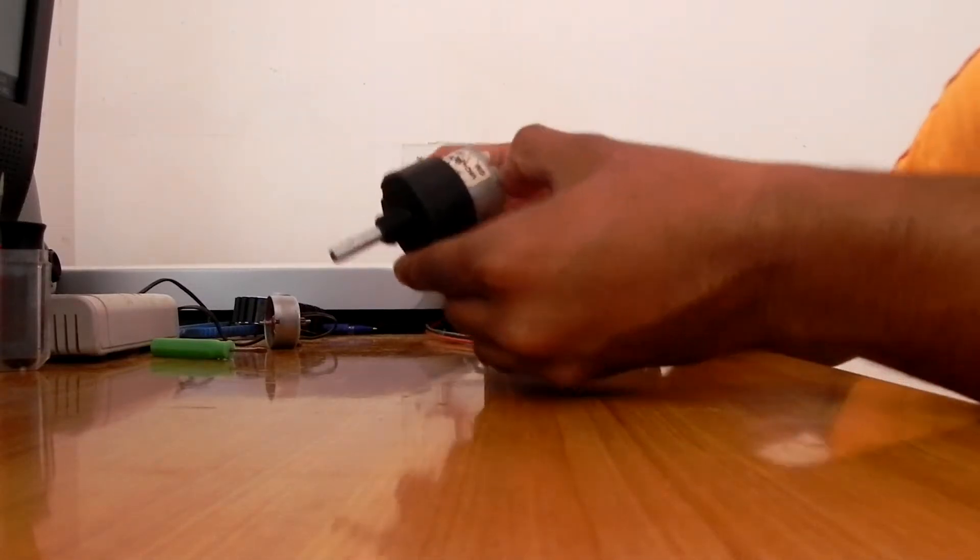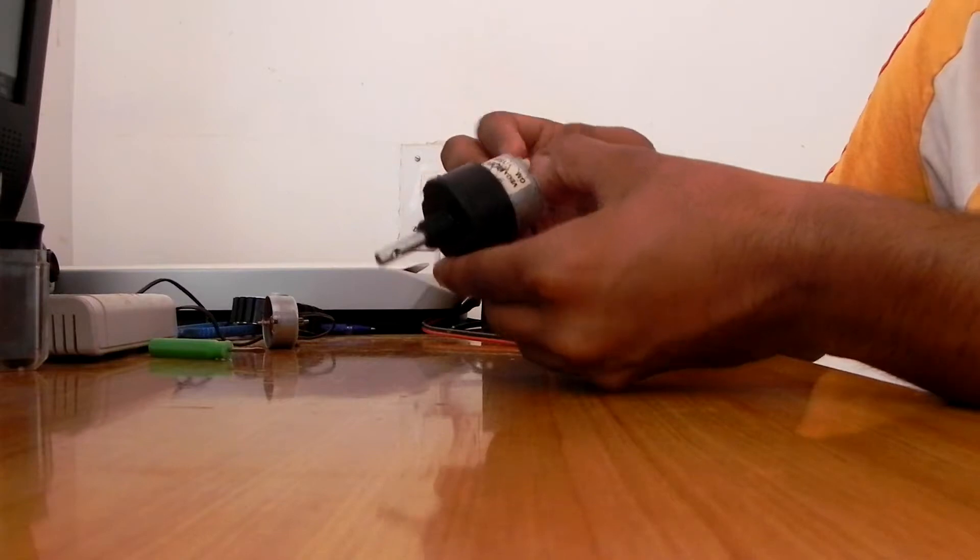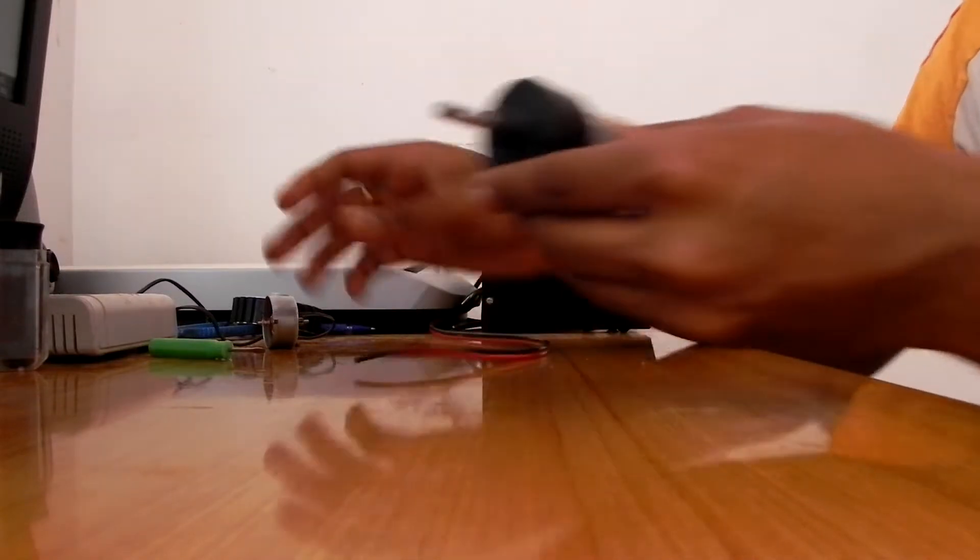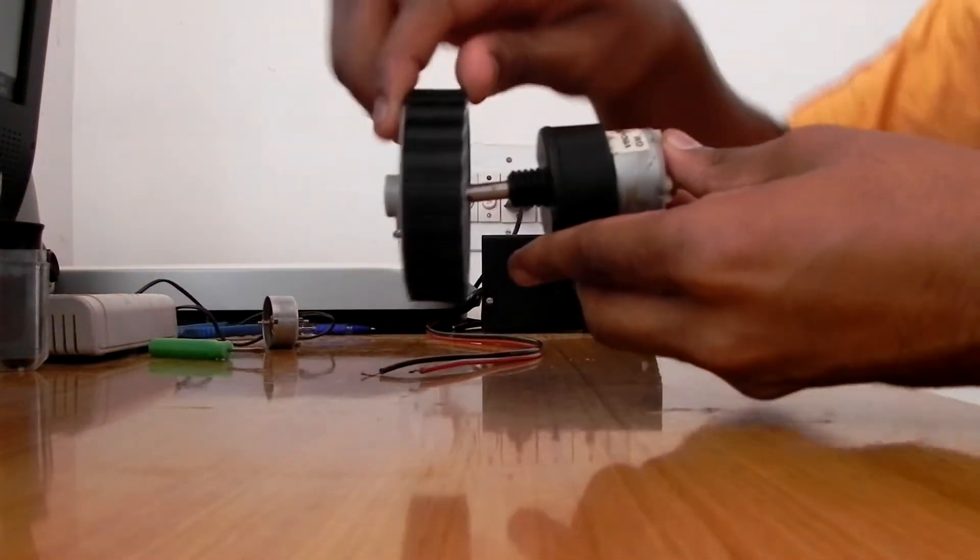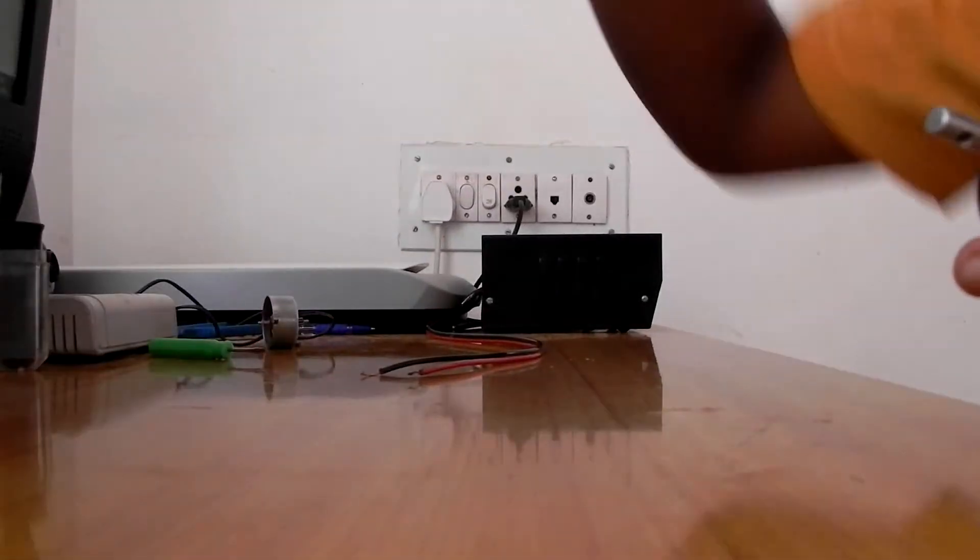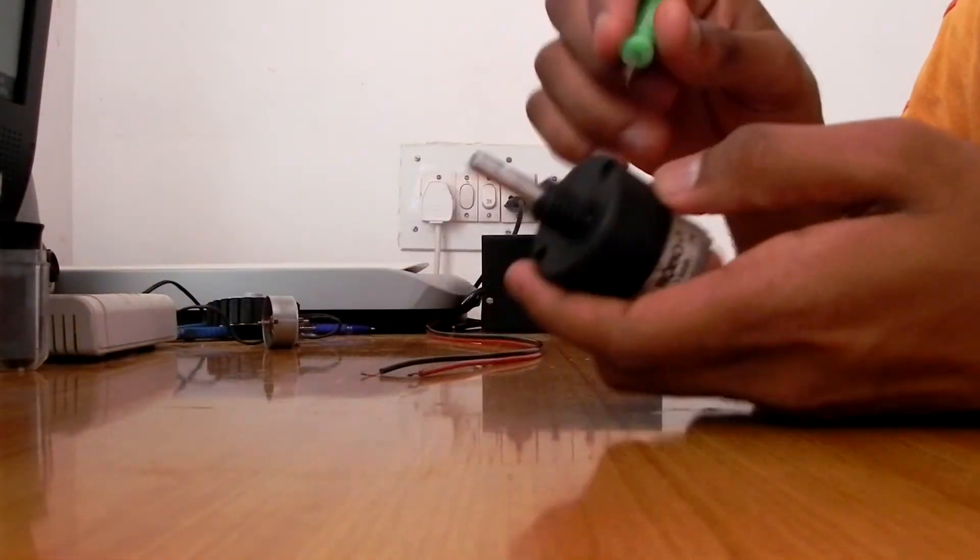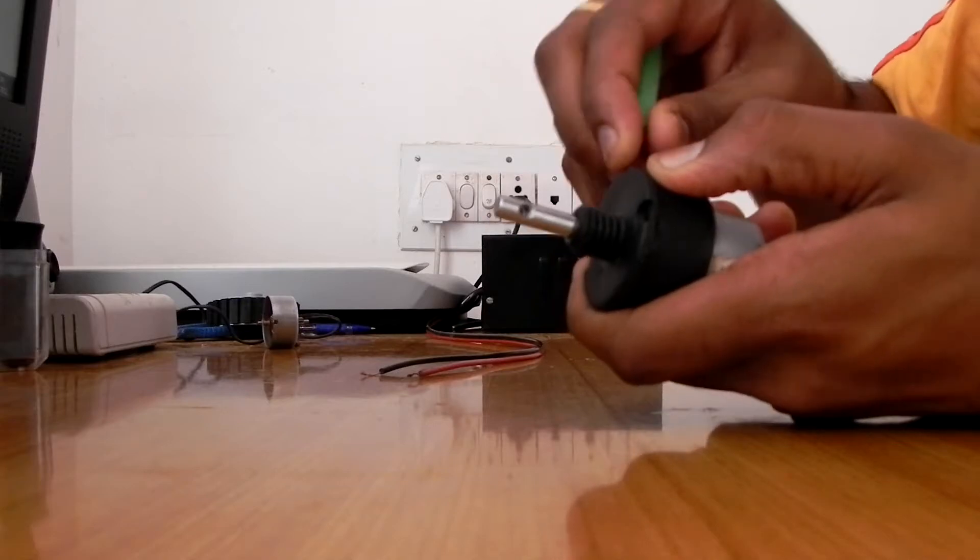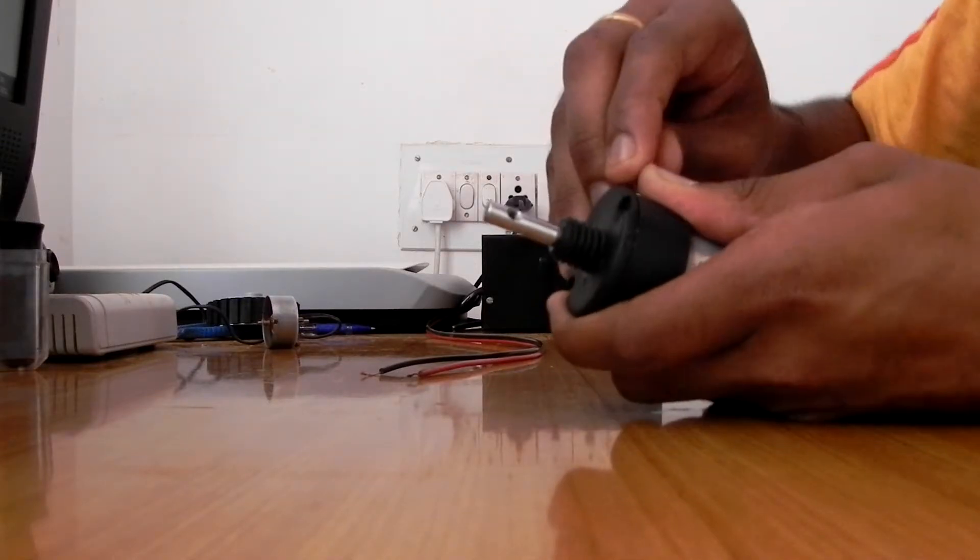Something is happening in these both boxes which is making this spindle move. The spindle is connected to the wheel which moves and the robot moves. Let's try to open this black box and see what's inside it.